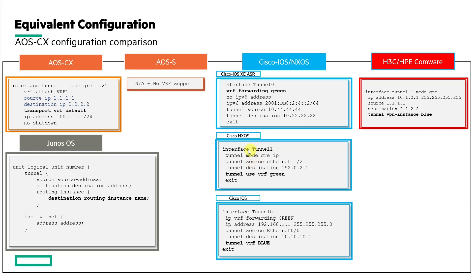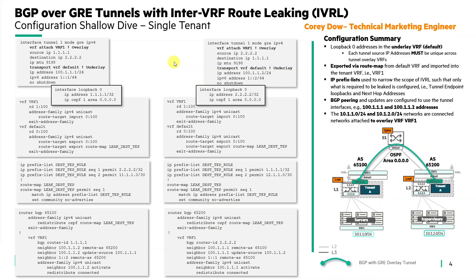On this slide, we're doing a configuration shallow dive representing a single tenant to keep the configuration small so you can focus on what's needed to enable this functionality. For the topology, we're sticking with a single tenant — we have two VRFs, VRF1 and VRF2, with two different networks connected across the underlay network using GRE tunneling and BGP peering. We've got AS65100 and AS65200, with the default VRF and VRF1.